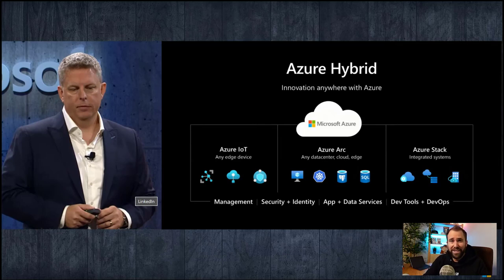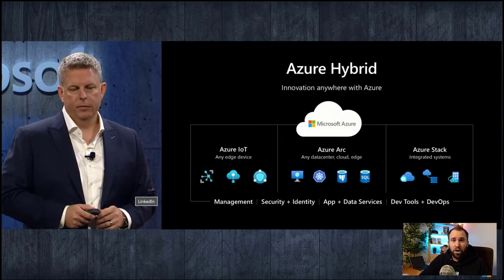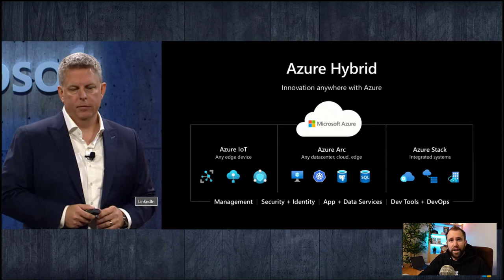We are very serious about helping our customers with their challenges. In many cases, customers cannot just move everything to the cloud. There are many reasons why customers also need to run services on-premises or at the edge — things like bad or no network connectivity, applications that can't handle latency, data sovereignty challenges, regulations that forbid companies to store sensitive data outside their own country, or internal policies that say you cannot store data outside your four walls. So customers have valid reasons why they want to be in a hybrid environment.